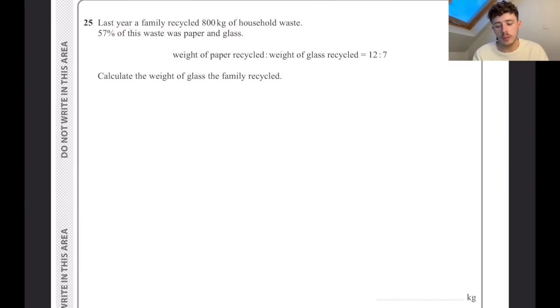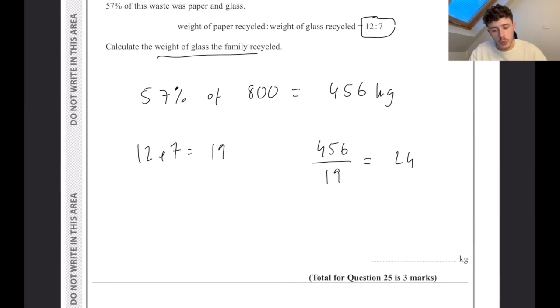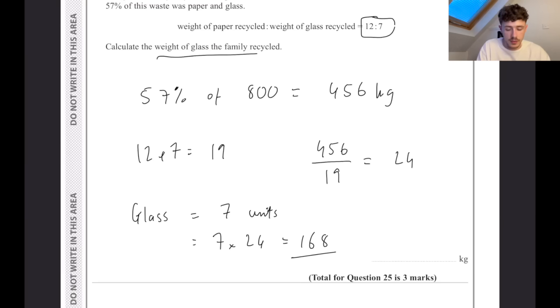Last year, a family recycled 800 kilograms of household waste. 57% of this waste was paper and glass. The weight of the paper recycled to the weight of the glass recycled is 12 to 7. Calculate the weight of the glass. First, we need to work out 57% of 800. We can do that by putting 0.57 times 800, which gives us 456 kilograms. We now need to share that in the ratio 12 to 7. So 12 plus 7 equals 19. 456 divided by 19 gives us 24, so one unit of that ratio is worth 24 kilograms. Because glass equals 7 units of the ratio, we do 7 times that 24, which gives us 168.